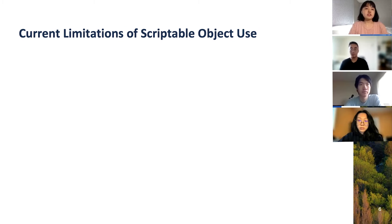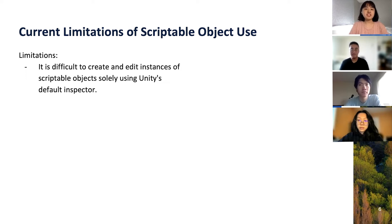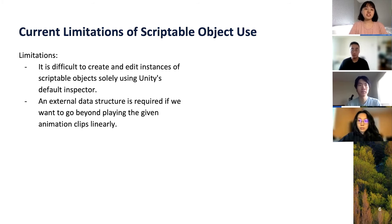There are currently two limitations of our use of Scriptable Objects. One, it is difficult to create and edit instances of Scriptable Objects solely using Unity's default inspector. And two, an external data structure is required if you want to go beyond playing the given animation clips linearly.